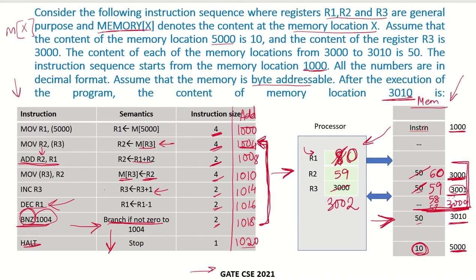The loop only updates memory locations 3000 to 3009. So what will be the content of memory location 3010? It will still be 50. The answer is 50. This is how you work out this particular question.